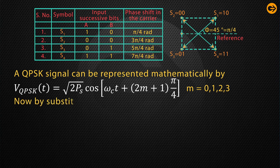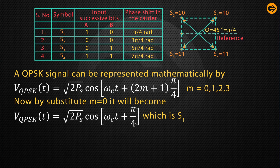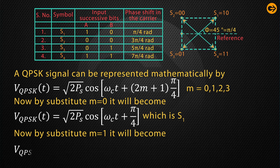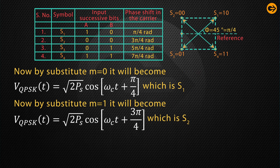By substituting m = 0, it becomes V_QPSK = √(2Ps) · cos(ωc·t + π/4), which is symbol S1. By substituting m = 1, it becomes V_QPSK(t) = √(2Ps) · cos(ωc·t + 3π/4), which is S2.